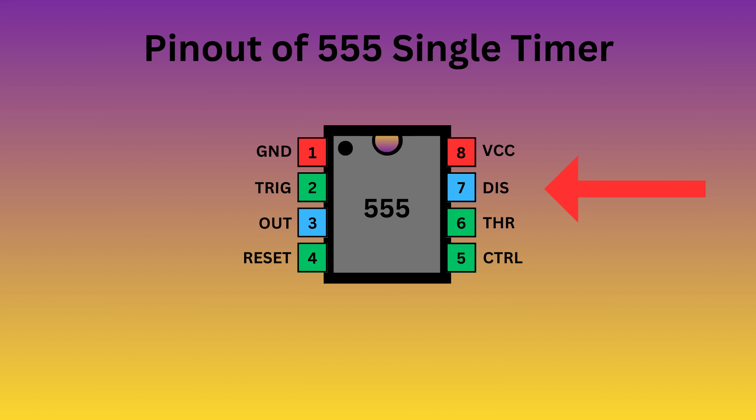Pin 7 is discharge. It controls the charge and discharge cycle of the timing capacitor. Pin 8 is VCC. It is responsible for supplying the power to the IC.